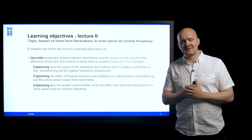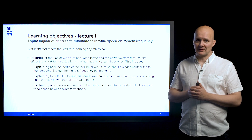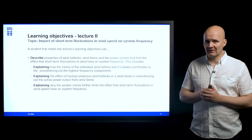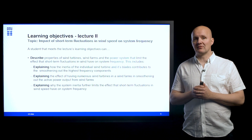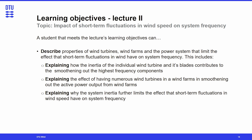The learning objectives defined for this lecture are as follows. A student that meets the learning objectives should be able to describe the properties of wind turbines, wind farms, and within the power system that limit the effect short-term wind fluctuations have on system frequency. This includes explaining how the inertia of individual wind turbines and their blades contributes to smoothing out the highest frequency components in the wind, explaining the effect of having numerous wind turbines in wind farms, and explaining why system inertia further limits the effect that short-term fluctuations in wind speed have on system frequency.